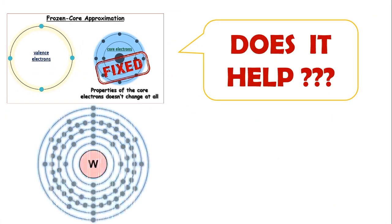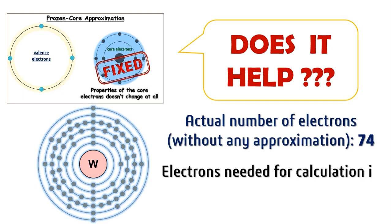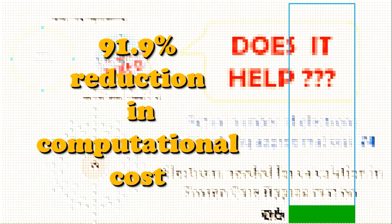In case of tungsten we have total 74 electrons. Guess how many electrons are needed to be described with frozen core approximation? Well, it's only 6 electrons. Hence clearly the frozen core approximation leads to a substantial computational saving.